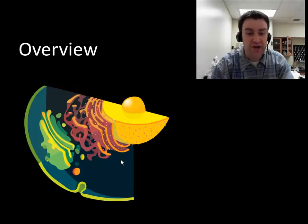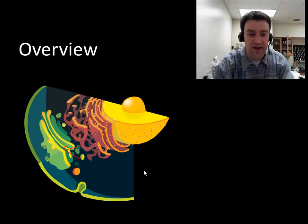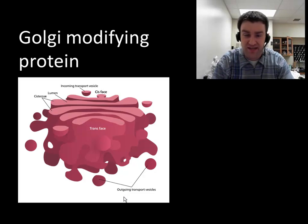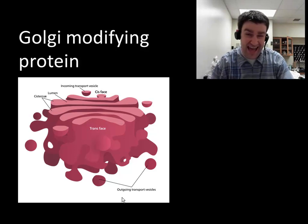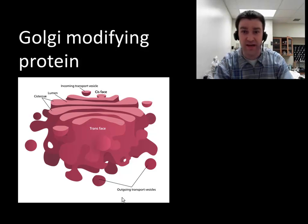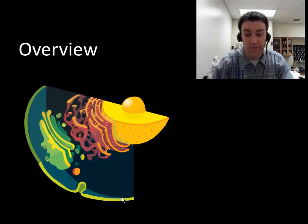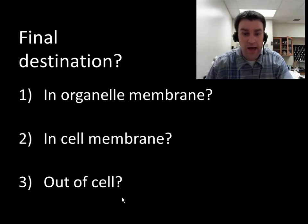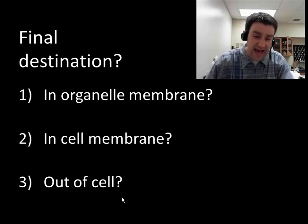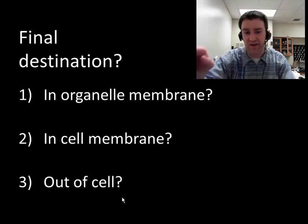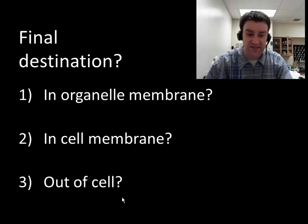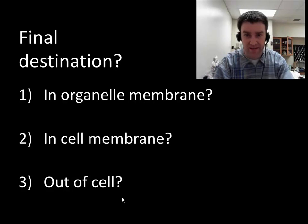Once the protein gets to the Golgi apparatus, the Golgi body modifies the protein, maybe adding finishing tags that indicate where it eventually goes. Maybe there are tags that ensure motor proteins carry the vesicle to the mitochondria if it's a mitochondrial protein. Maybe there are vesicles that take it to the cell membrane so it becomes embedded in the membrane.